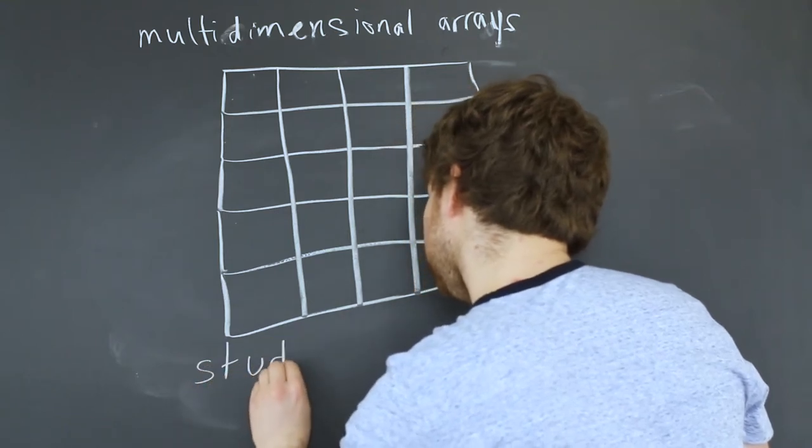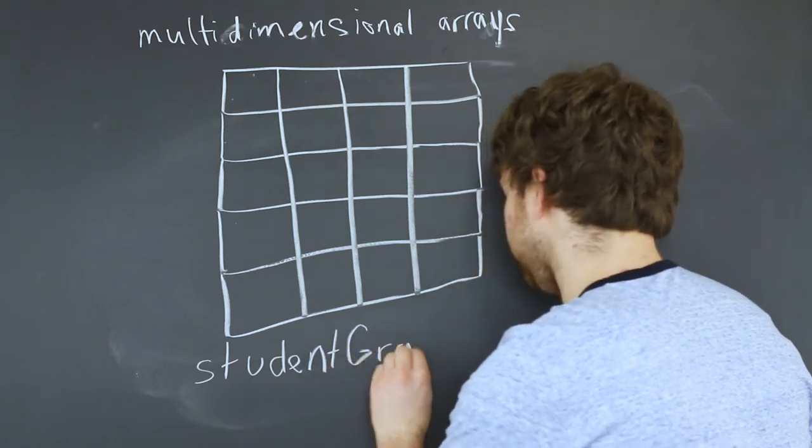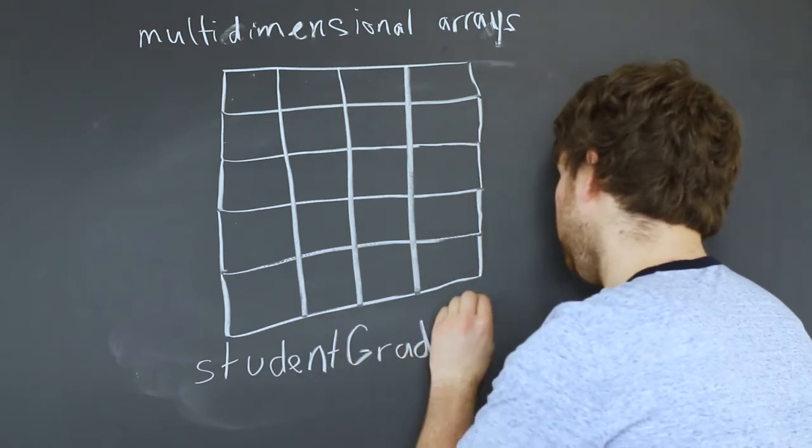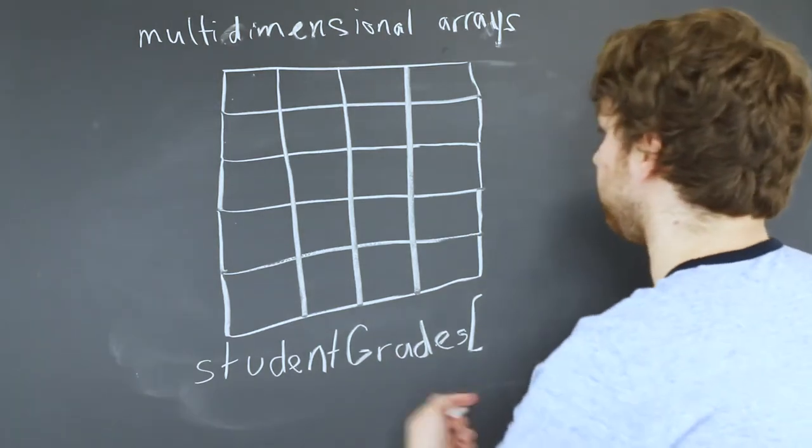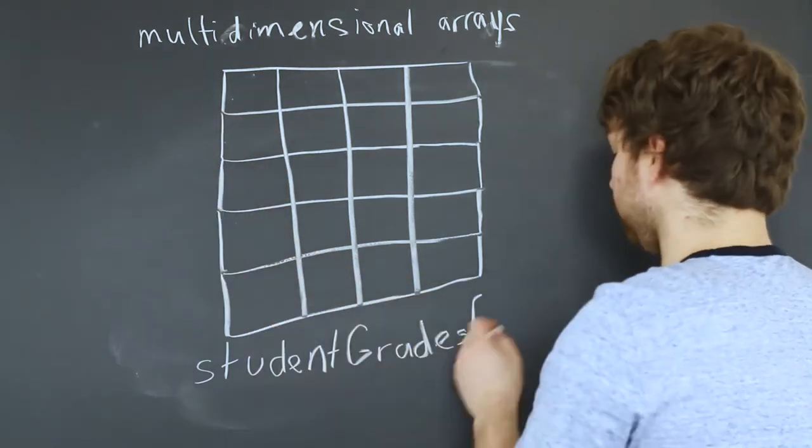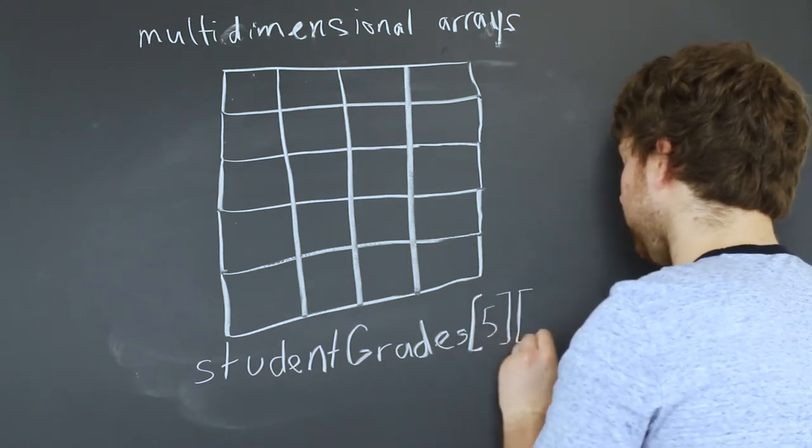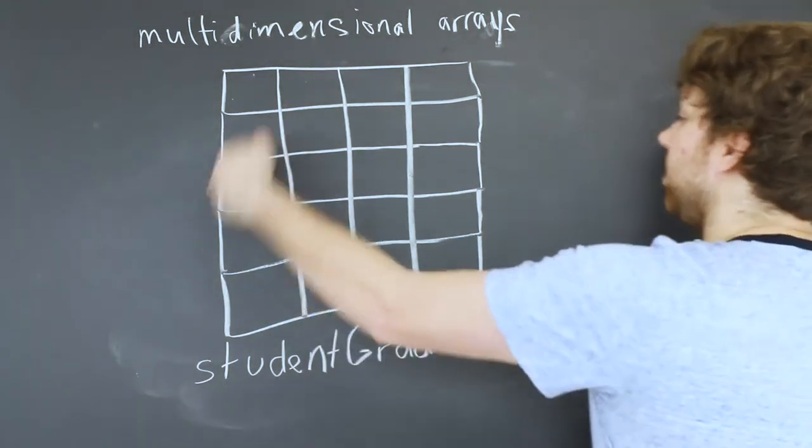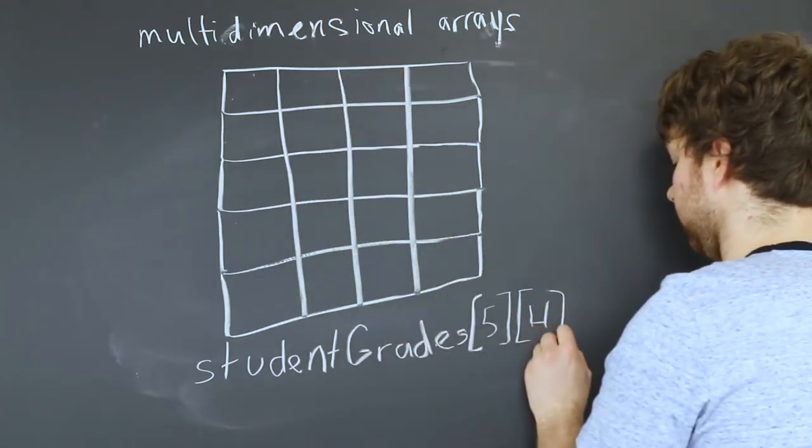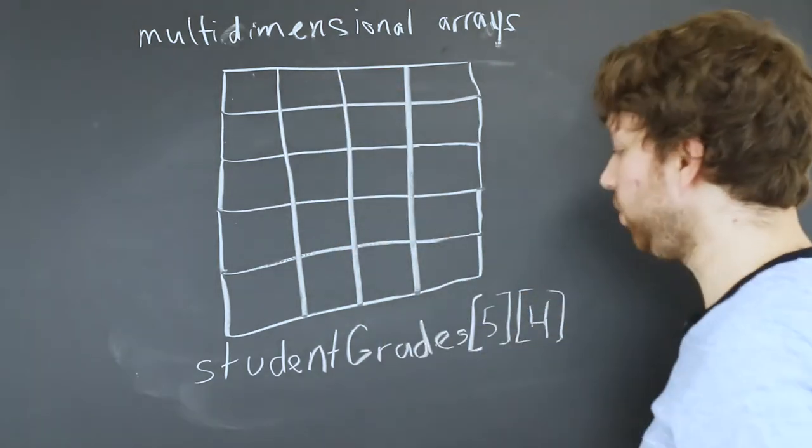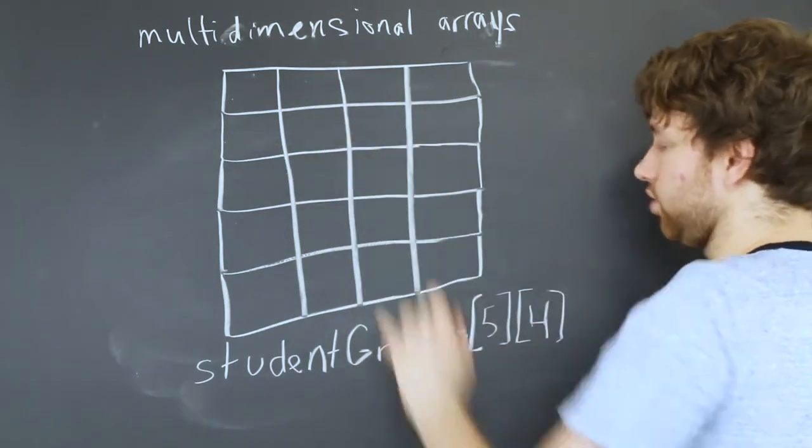It would look something like this: student grades. You're going to need two square brackets. The first square bracket refers to the rows, so how many rows are there? The answer is five. The next one is how many columns, which there's four. So there's going to be four grades.